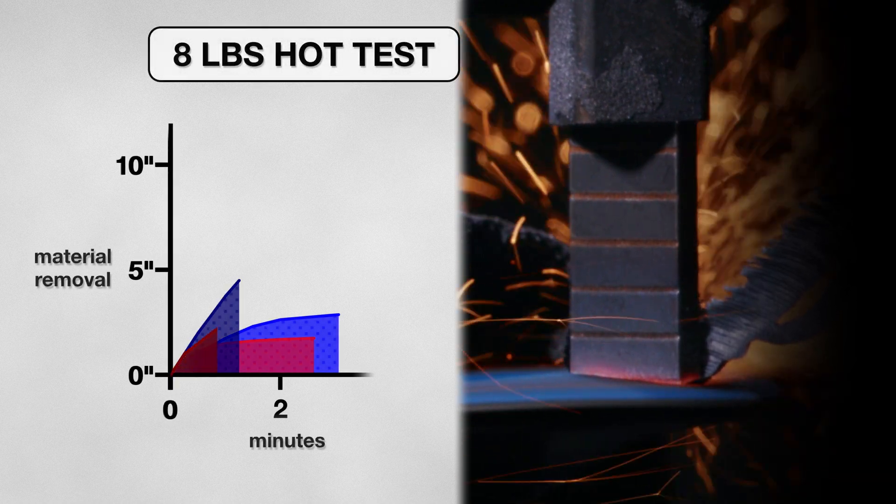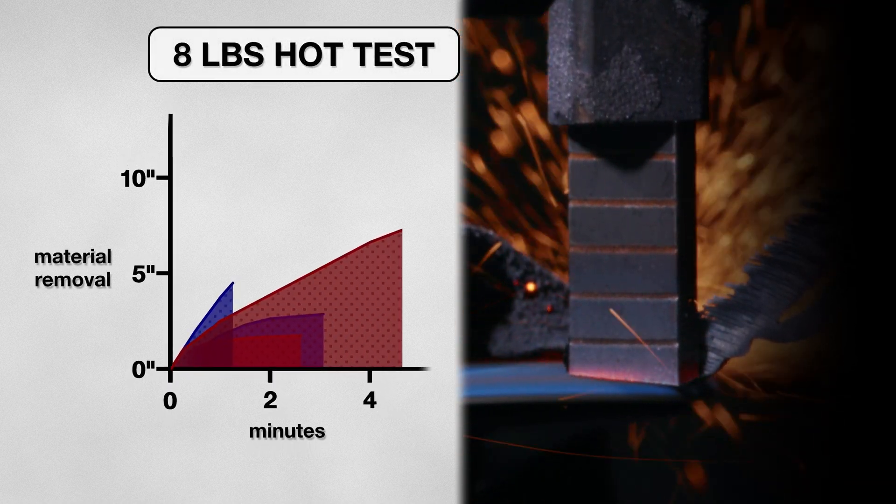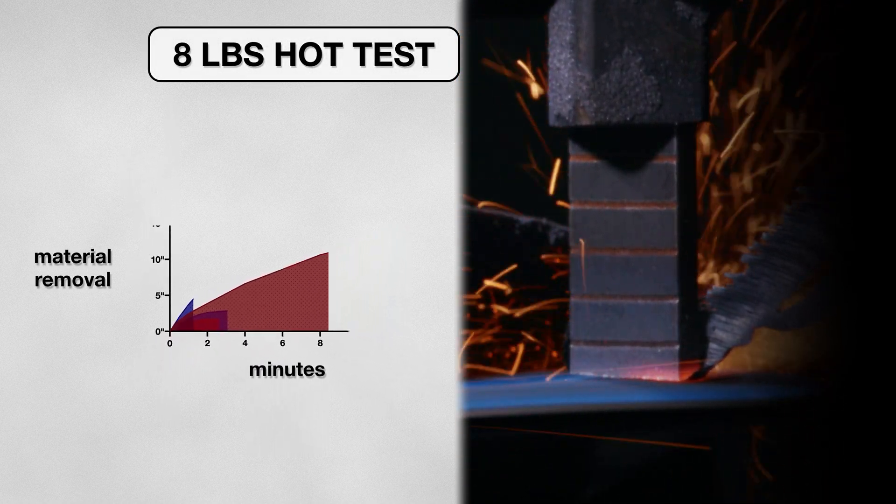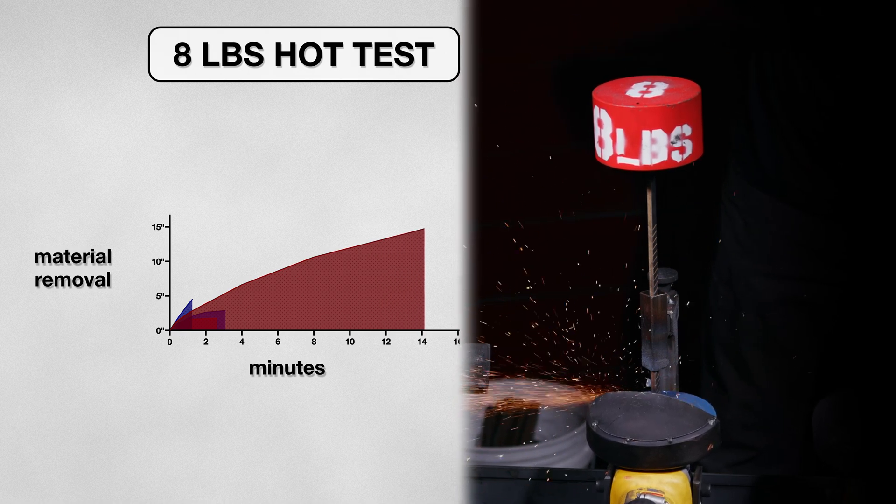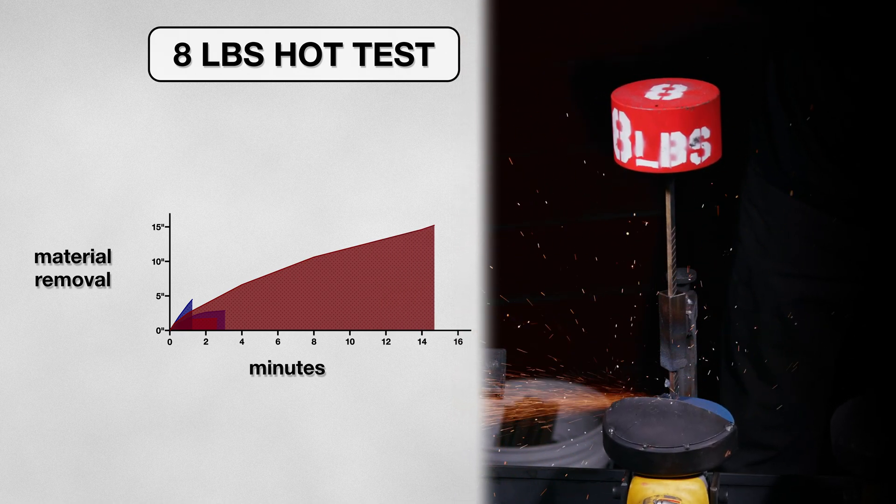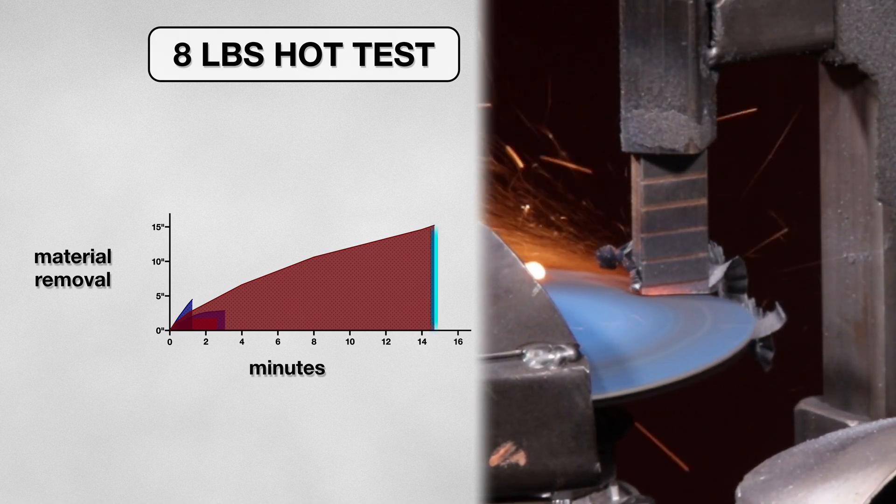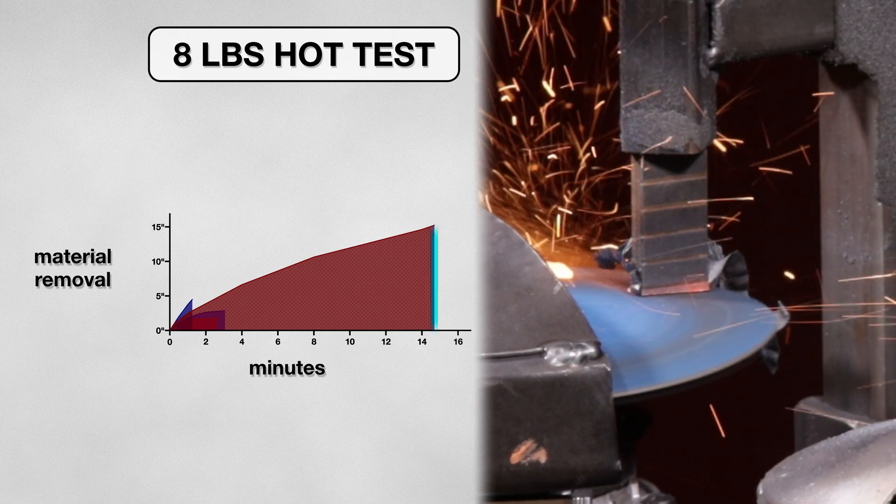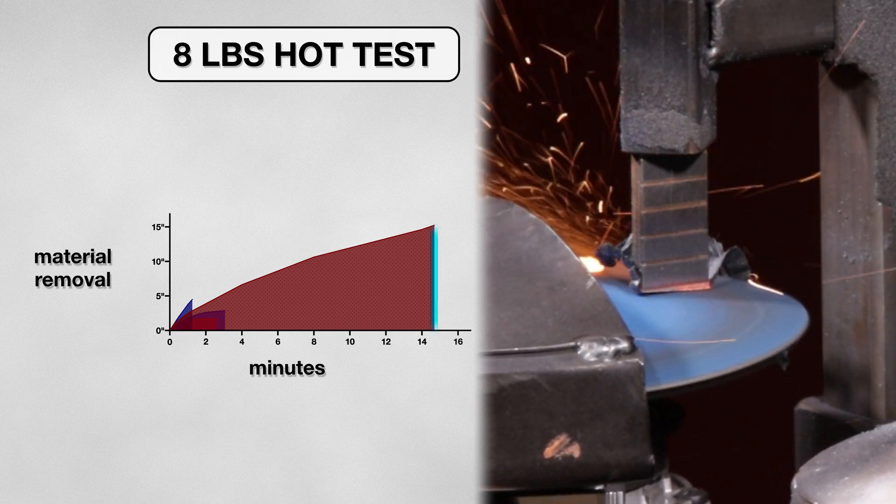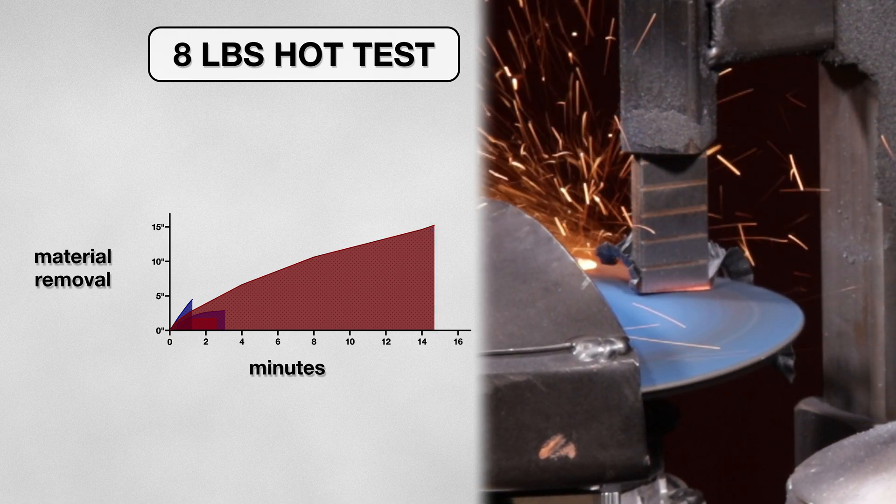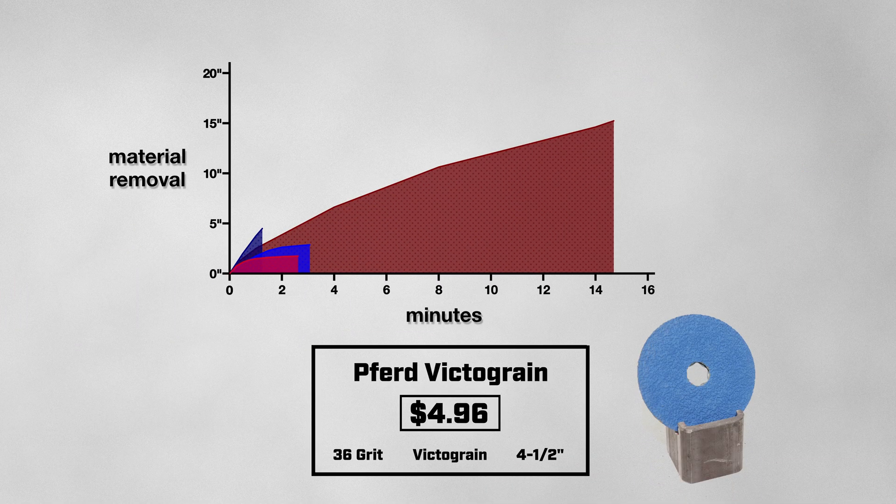To my delight, it very quickly passed where the previous disk smoked out, so I let it keep going, and going, and going. The disk was able to make it all the way to 14 minutes before I saw some signs of glazing. Soon after I stopped the test because the glazing had gotten too severe. In the end, I measured a solid 15 inches of material cut. The hot metal definitely helped this disk out.